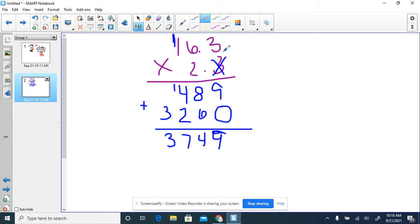Now we've got to figure out how many decimal spots to move. In our first number here, we have one spot for our decimal. In our second number, we have one spot for our decimal. So total, we have two spots for our decimal. That means in our answer, we're going to move over two spots. There's our answer, 37.49.